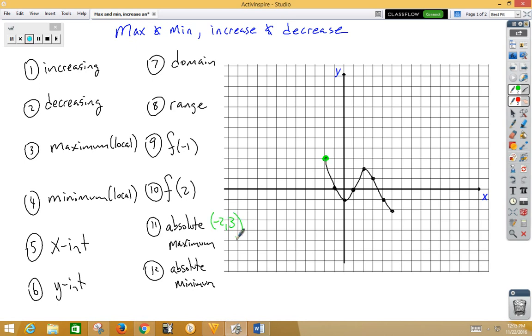Absolute minimum would be the absolute lowest part of the graph. That would be over here at 5, negative 2. That's some graphing vocabulary on a picture that looks like this.